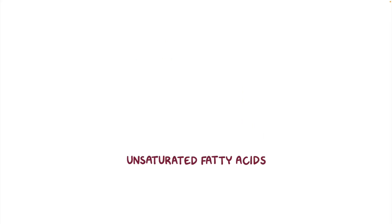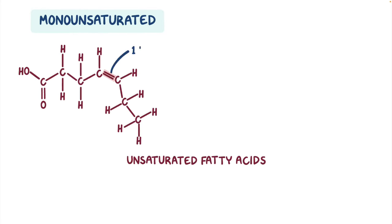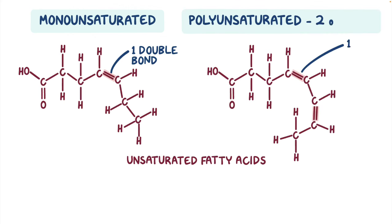Unsaturated fatty acids can be further classified, according to the number of their double bonds. Monounsaturated fatty acids are unsaturated fatty acids with just one double bond. Polyunsaturated fatty acids have two or more double bonds.